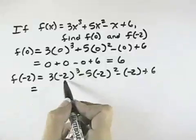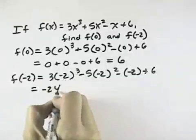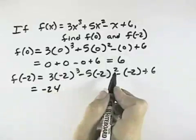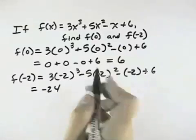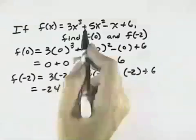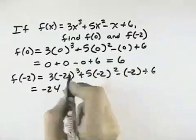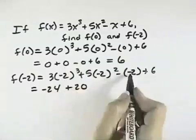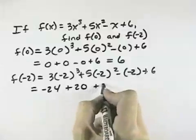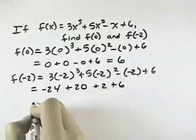Negative 2 cubed is negative 8 times 3 is negative 24. Negative 2 squared is 4, this should be a plus here, sorry, plus from our equation, plus 5. So negative 2 squared is 4 times 5 is a plus 20. Negative of negative 2 is positive 2 and positive 6.